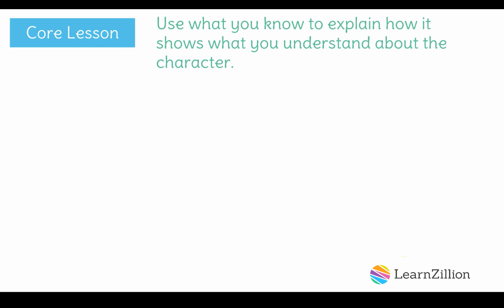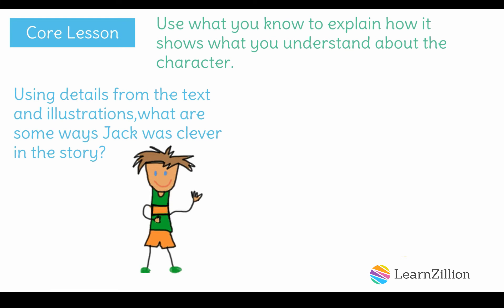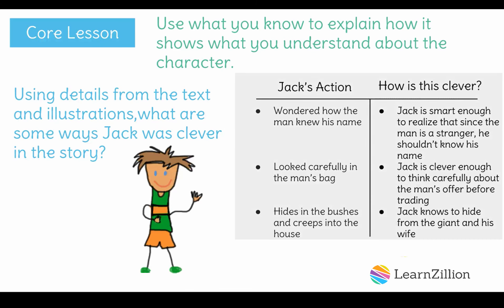Now I will go back and re-read the focus question and make sure that I have answered it correctly: using details from the text and illustrations, what are some ways Jack was clever in the story? I need to look at the first detail and explanation. Jack wondered how the man knew his name, which shows that Jack is smart enough to realize that since the man is a stranger, he shouldn't know his name. This detail and explanation does answer the question and shows how Jack was clever.